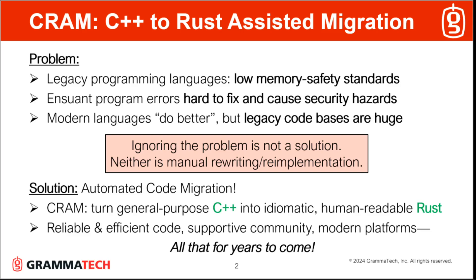Our solution then is automated code migration. The specific capability of CRAM, combined with our team's expertise, is to turn general-purpose C++ into idiomatic, human-readable Rust code. This increases reliability by eliminating many common types of memory errors, like use-after-free, and it also gives you various other benefits for years to come.